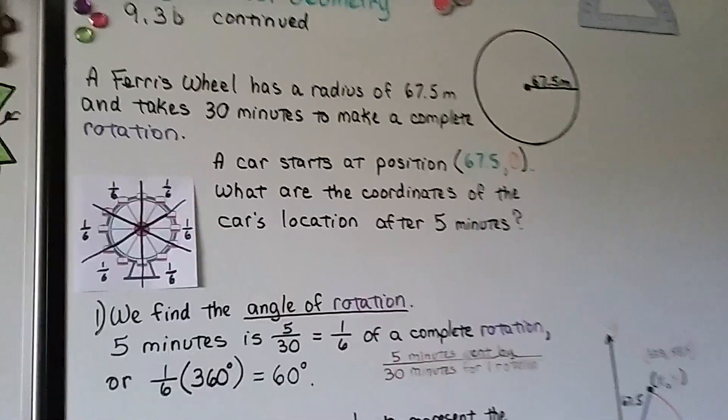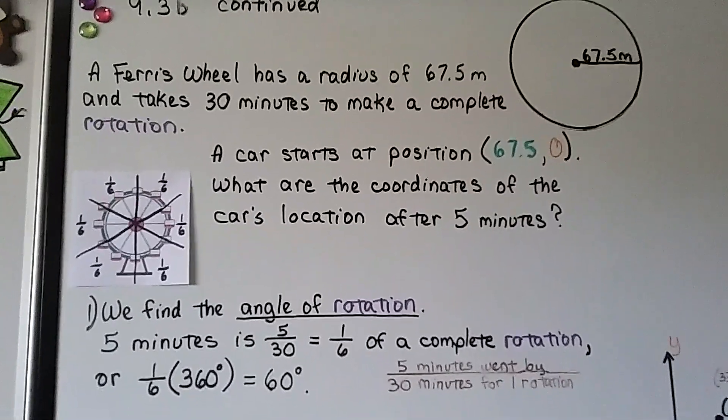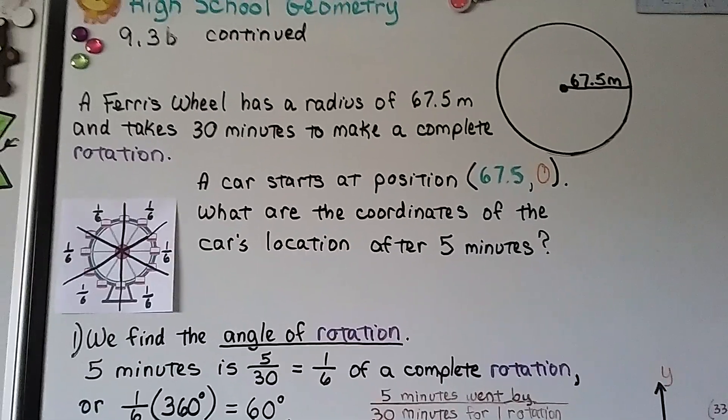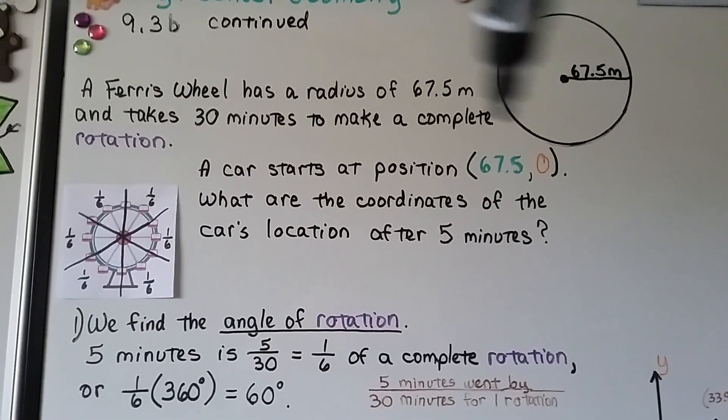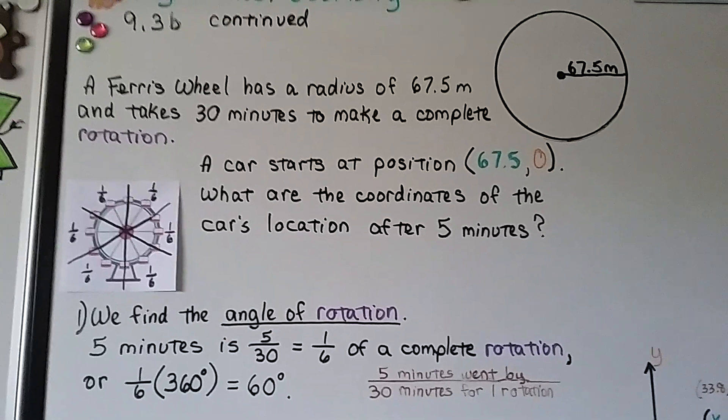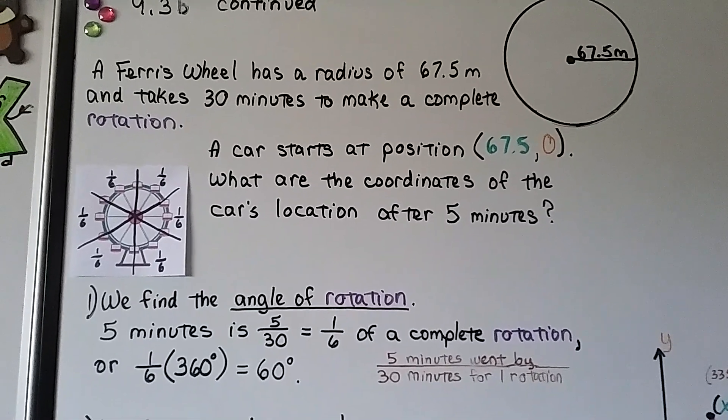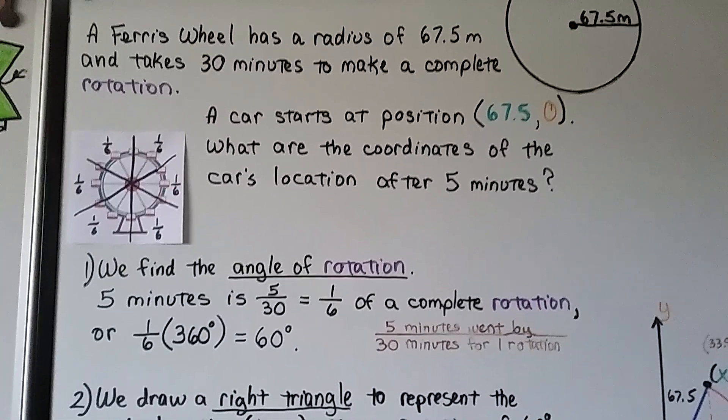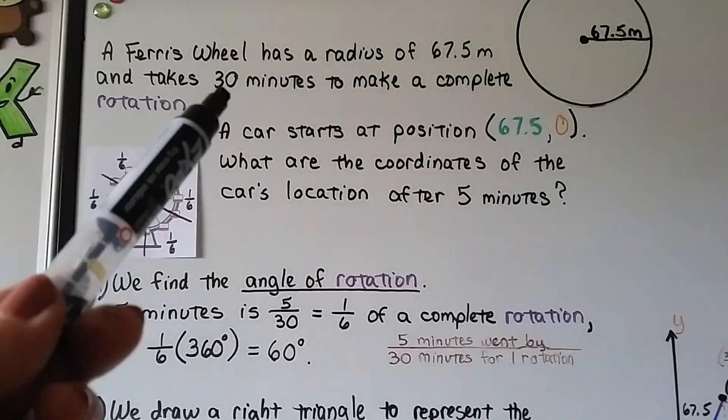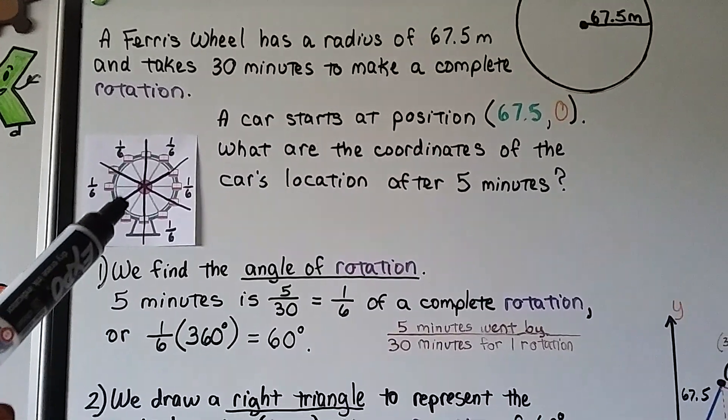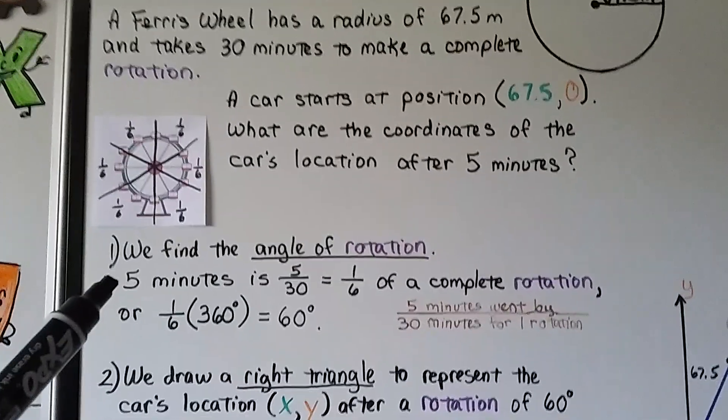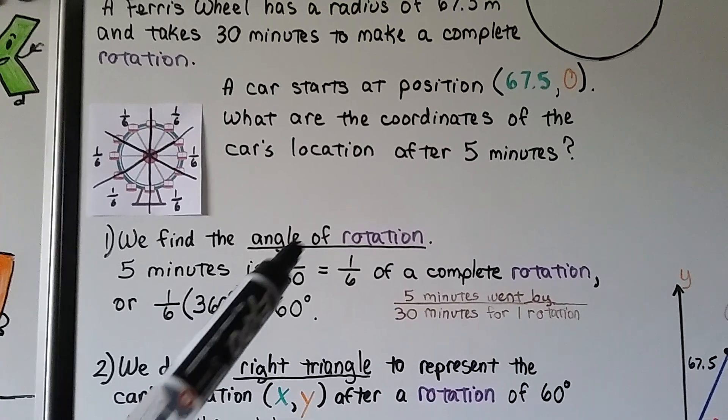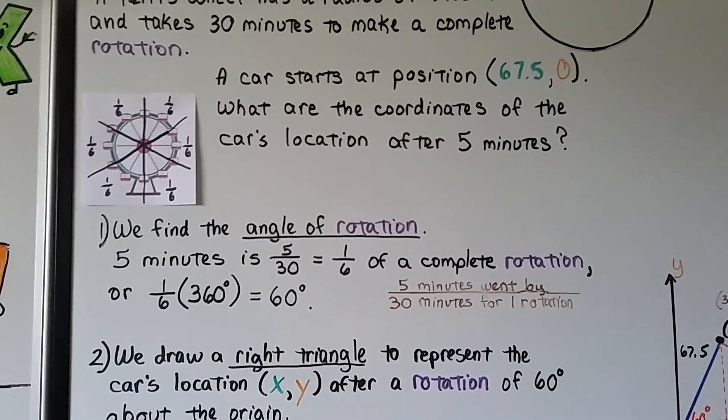Now the Ferris wheel has a radius of 67.5 meters and takes 30 minutes to make a complete rotation. So a car starts at position 67.5, 0 for the x and y. What are the coordinates of the car's location after 5 minutes? Well it told us that 30 minutes is a complete rotation, so 5 minutes would be a 1 6th rotation. We find the angle of rotation and 5 minutes is 5 over 30 or 5 thirtieths, which reduces to 1 6th of a complete rotation.